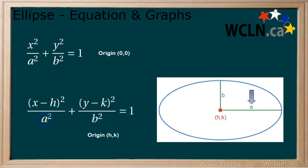A represents the distance horizontally from the origin to the edge of the ellipse. B represents the distance vertically from the origin to the edge of the ellipse.